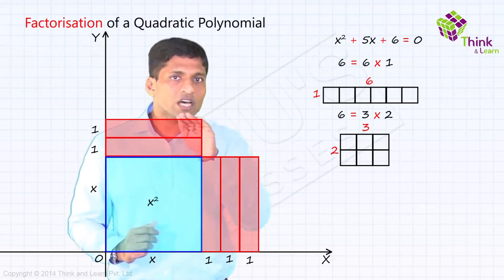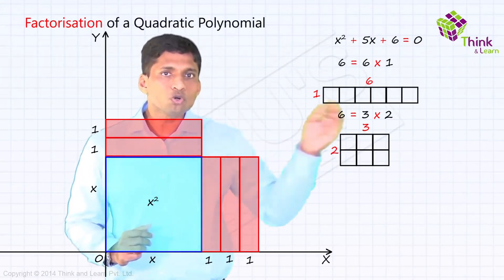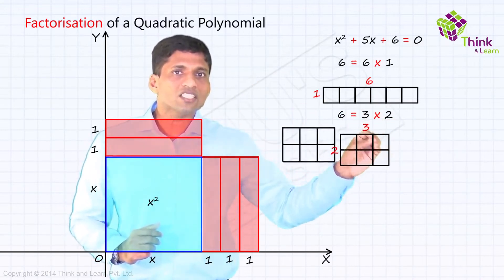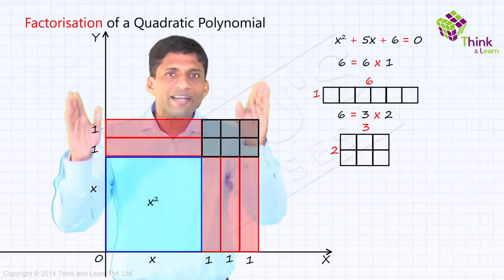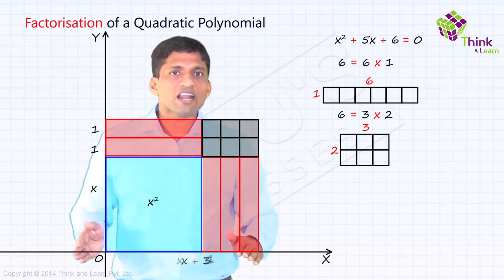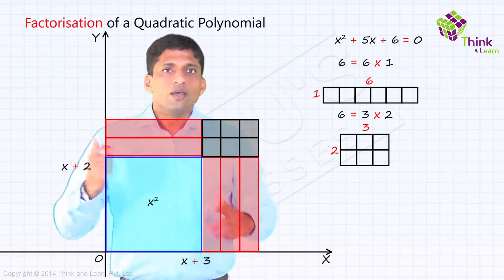That rectangle is with length 3 and breadth 2. So I can directly take this 3 by 2 rectangle and fill it here. So it's a complete rectangle now with length x plus 3 and breadth x plus 2.